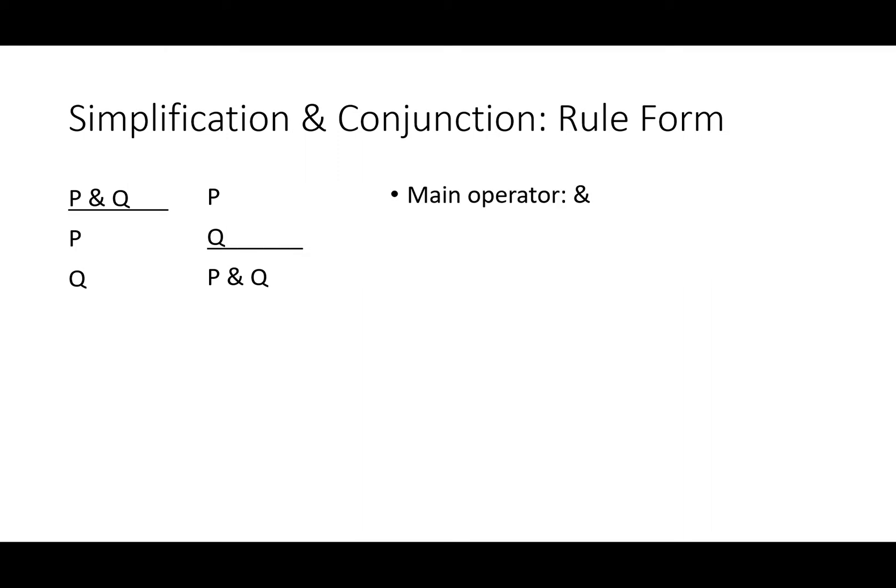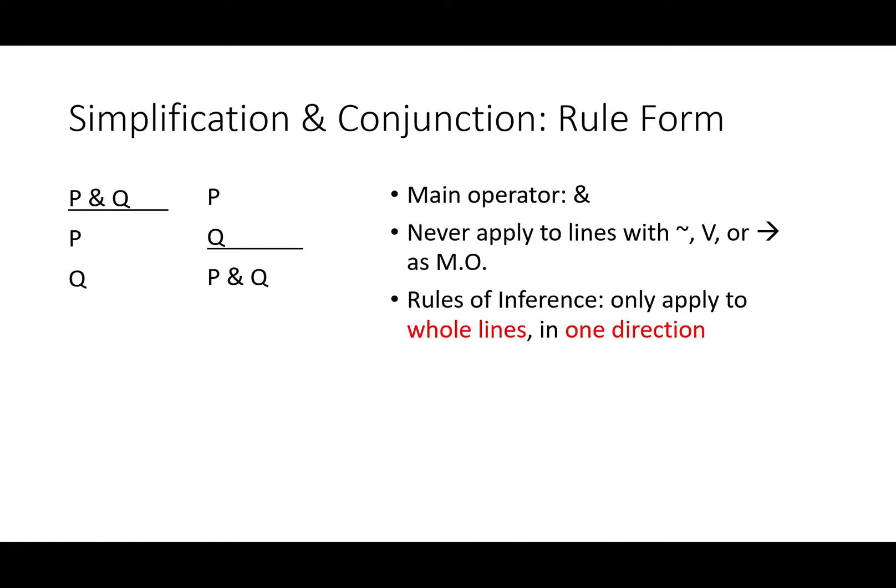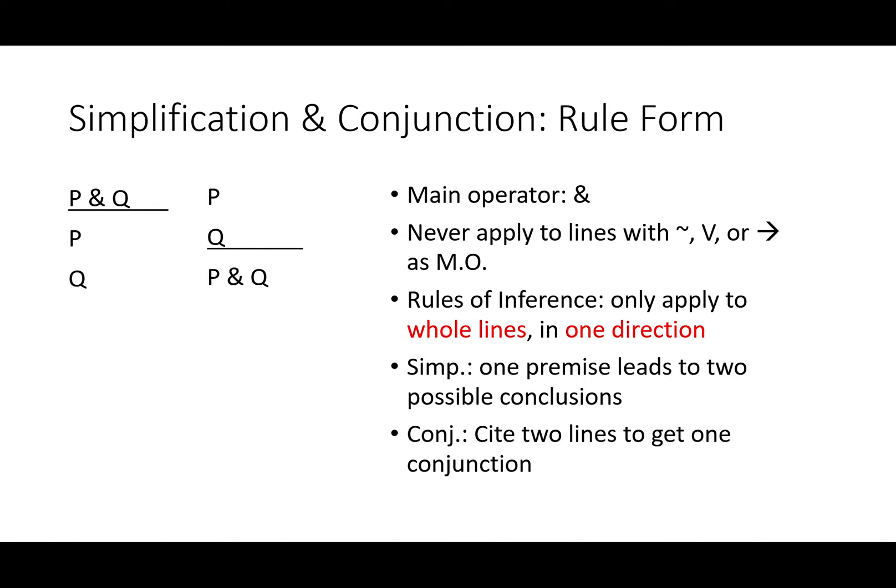In both of these rules, the main operator is ampersand. For simplification, you take an ampersand and show that it entails each side of it separately. With conjunction, you can conjoin any two premises no matter what operators they use and put them on either side of a new conjunction with the ampersand as the new main operator. What you can't do is use simplification in lines with not, V, or arrow. These rules of inference only apply in one direction and only apply to whole lines. With simplification, exactly one premise leads to either one of two possible conclusions. With conjunction, you must cite two lines to get one conjunction.